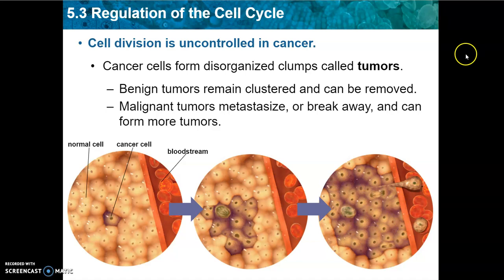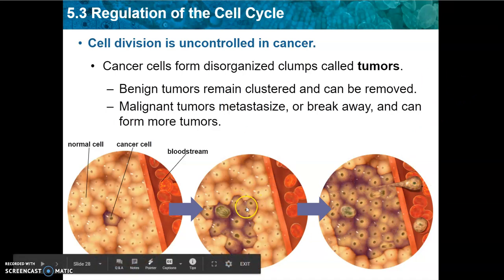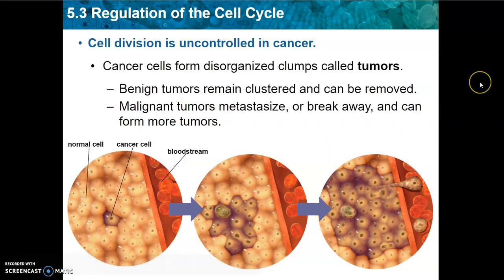When a malignant tumor breaks off and a cell enters the bloodstream and travels somewhere else, we call that metastasizing. A metastasized tumor is how a clump of cancer cells called a tumor can actually spread to other parts of the body.